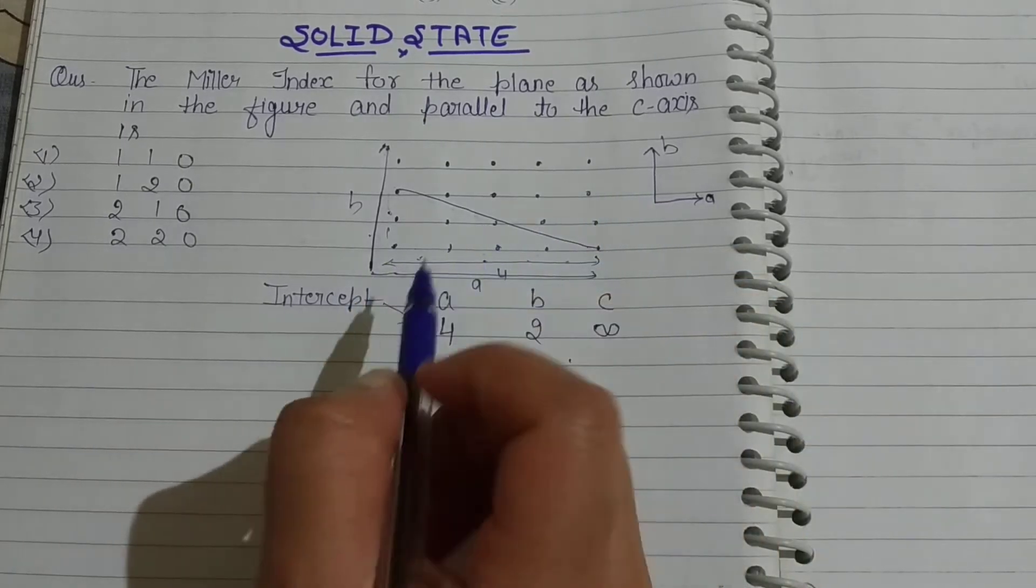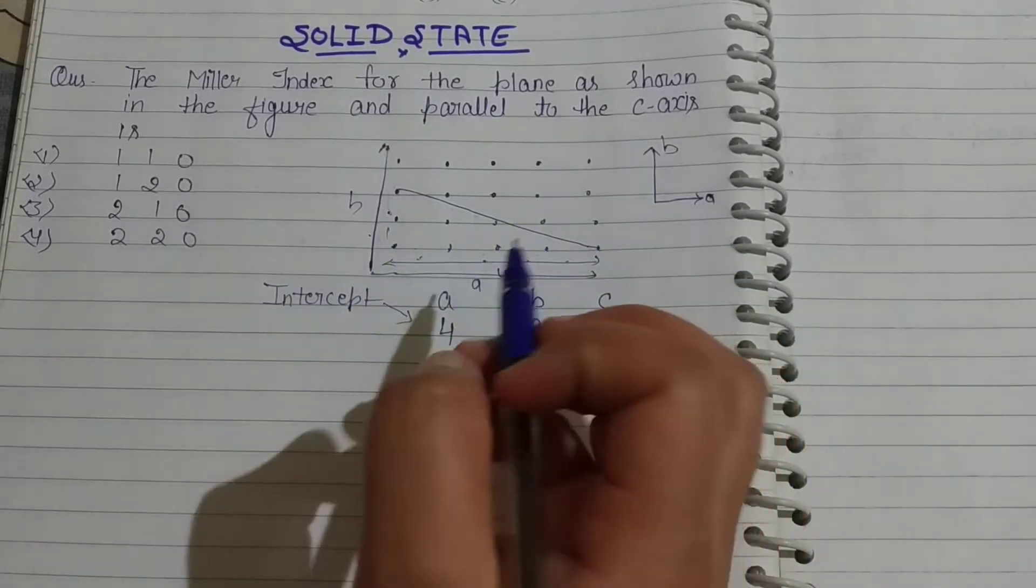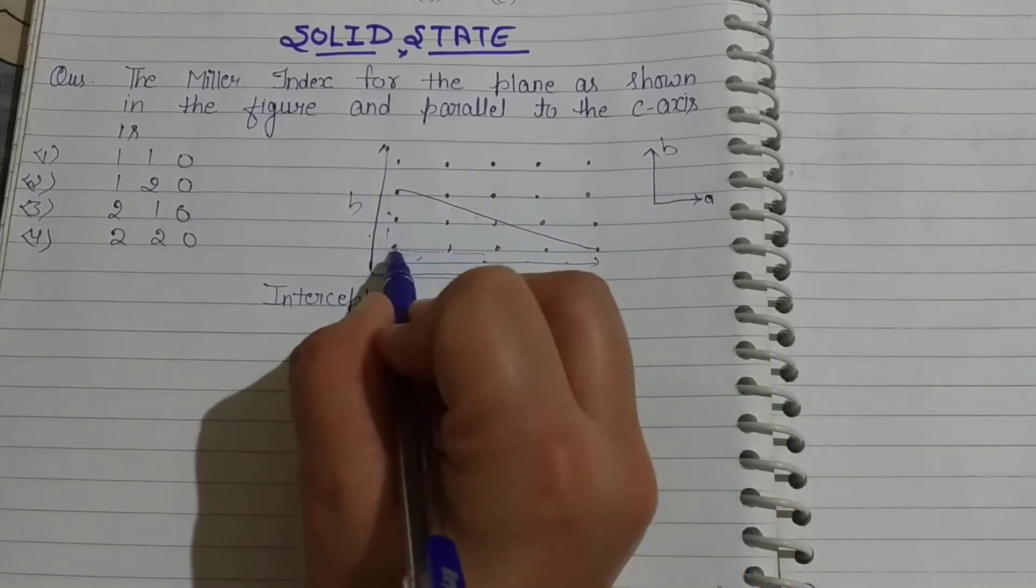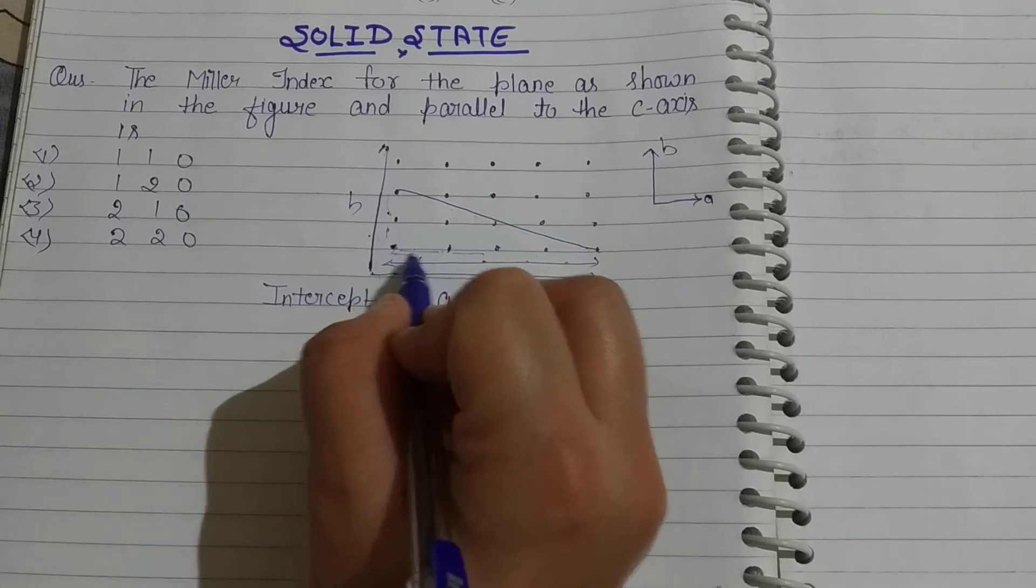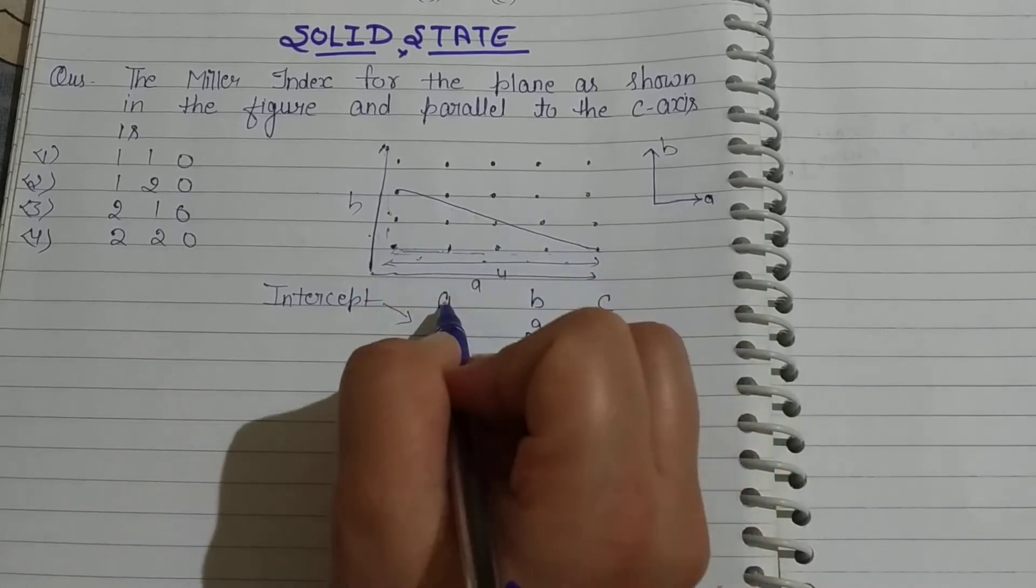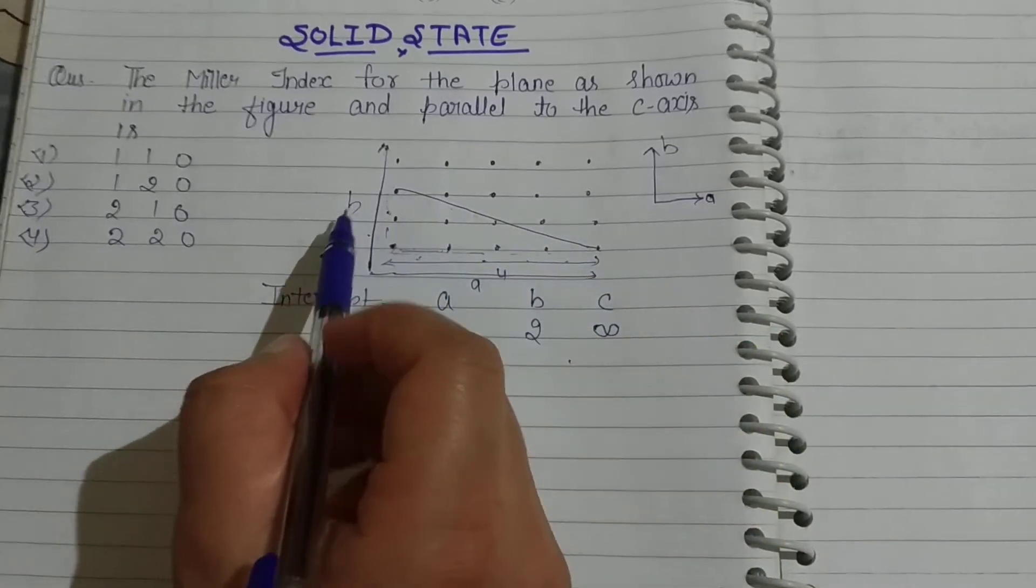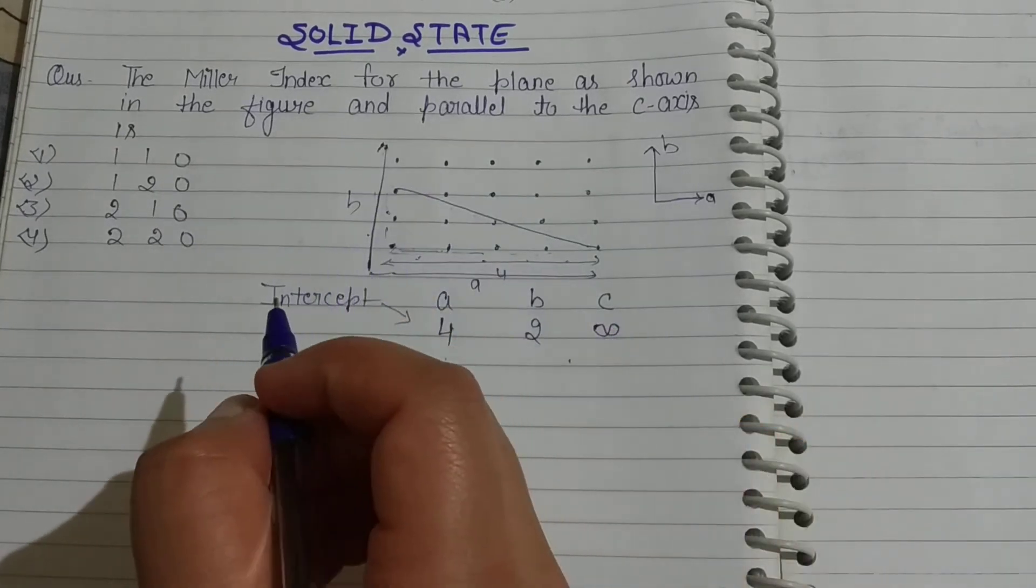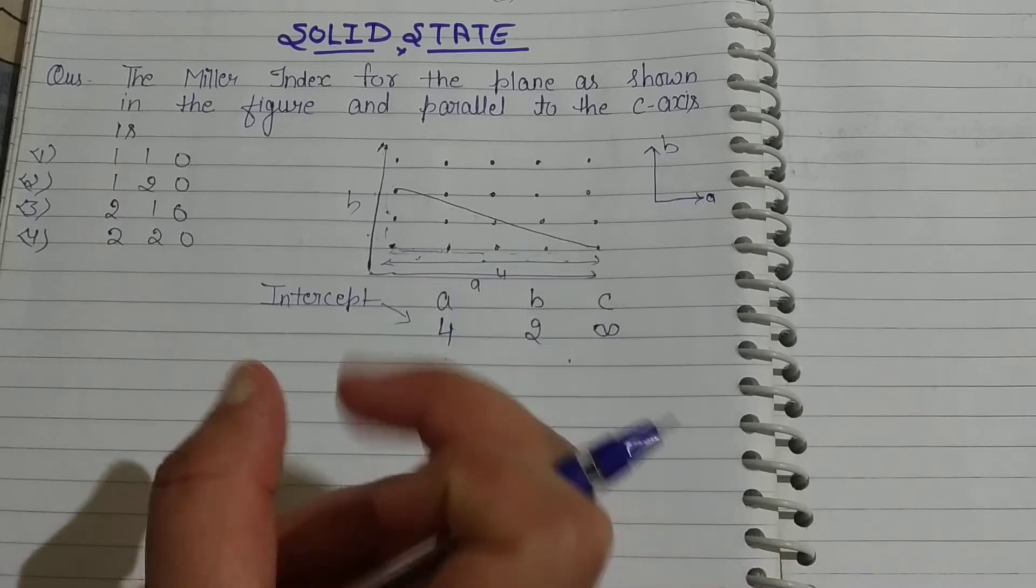We have to find the intercepts. How much is the A axis? Total distance 1, 2, we have given 1 point, so the total is 1, 2, 3, 4. A axis is 4. And B axis is 1 and 2. And C axis is parallel. If we make it parallel to the plane, then the intercept is infinite.